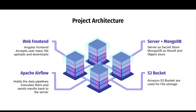It connects to MongoDB, which is basically our result and object store. For the data pipelining tool we have Apache Airflow. It holds all the data pipelines, executes them, reruns them, and also sends the results back to the server. And lastly we have an S3 bucket in Amazon which we use as file storage.